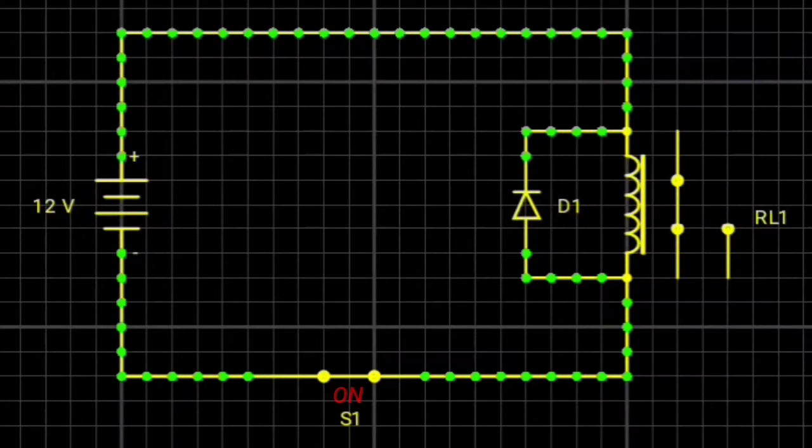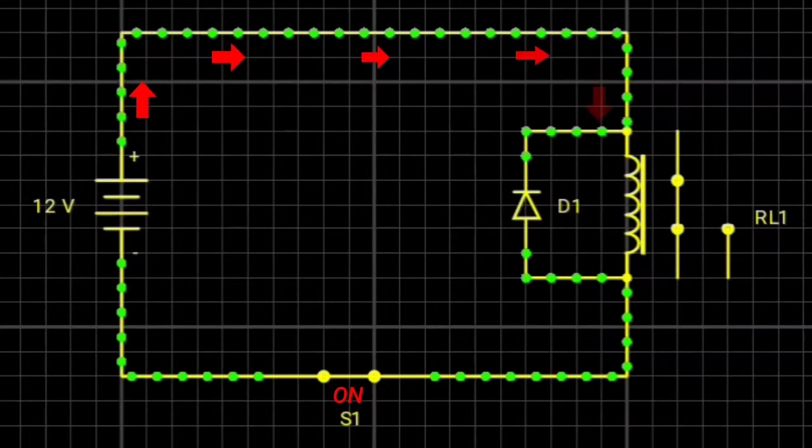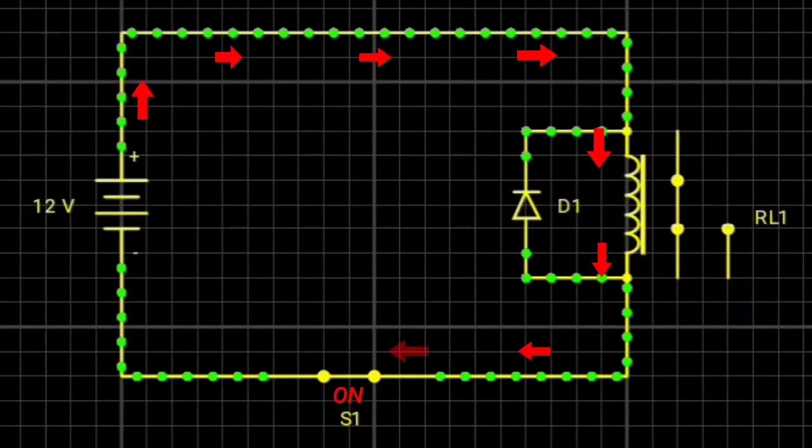When the relay is active, a current flows through the coil. No current passes through the diode because it is inversely polarized.